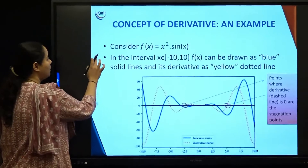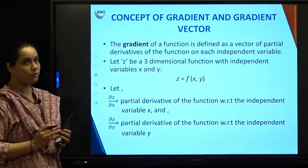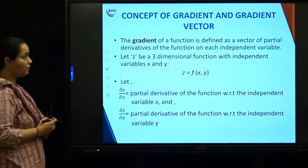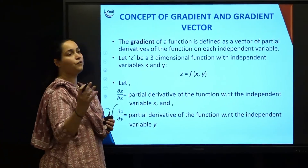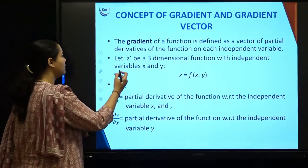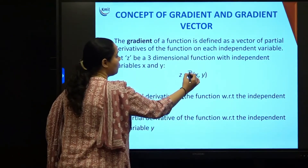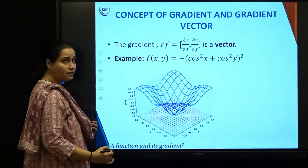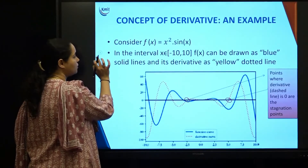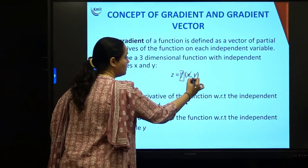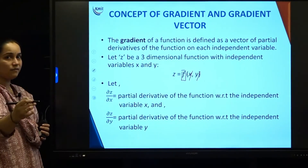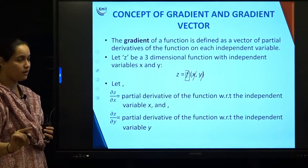Now the concept of gradient: the gradient of a function is defined as a vector of partial derivatives of the function with respect to each independent variable. Suppose you have a mathematical function f(x, y) — this function is dependent on two independent variables x and y. Gradient of a function is defined as a vector, meaning it not only has a magnitude but also a direction.